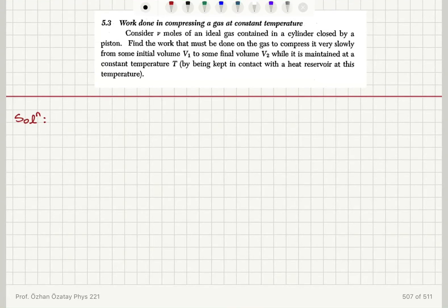Work done in compressing a gas at constant temperature. Consider new moles of an ideal gas contained in a cylinder closed by a piston. Find the work done that must be done on the gas to compress it very slowly from some initial volume Vi to final volume V2, while it is maintained at a constant temperature T.